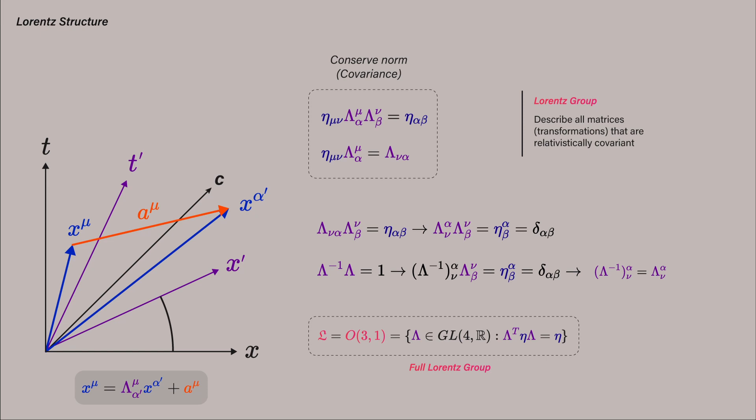With matrices, you can define this group to be the statement that is the set of all general linear 4x4 matrices with real entries that keep the metric eta constant under a composition lambda, eta, lambda transpose.